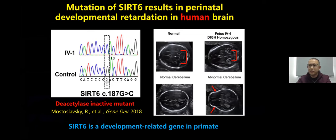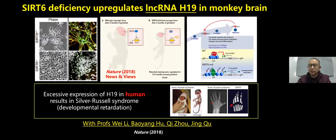Further study indicates that SIRT6 deficiency upregulates lncRNA H19 in monkey brains and human embryonic stem cell-derived neuronal progenitor cells. In wild-type cells, SIRT6 represses H19 expression through histone H3 deacetylation. When SIRT6 is depleted, H19 is transcriptionally induced and counteracts neuronal differentiation. It's worth noting that overexpression of H19 leads to Silver-Russell syndrome, which is a stunting disease.